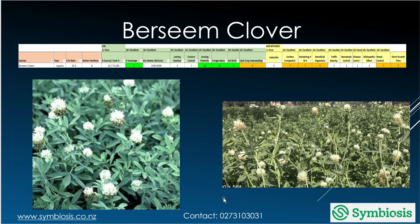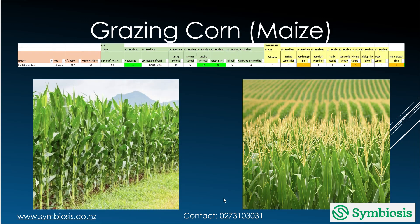Berseem clover is good at scavenging nitrogen, very good with grazing, and pretty good with soil compaction and rendering phosphorus and potassium. Grazing corn or maize is good at scavenging nitrogen and good for grazing.